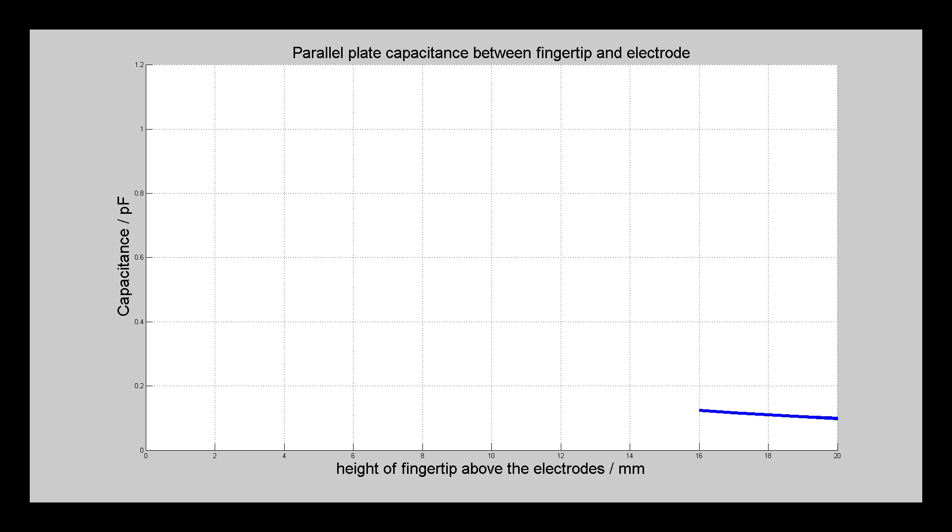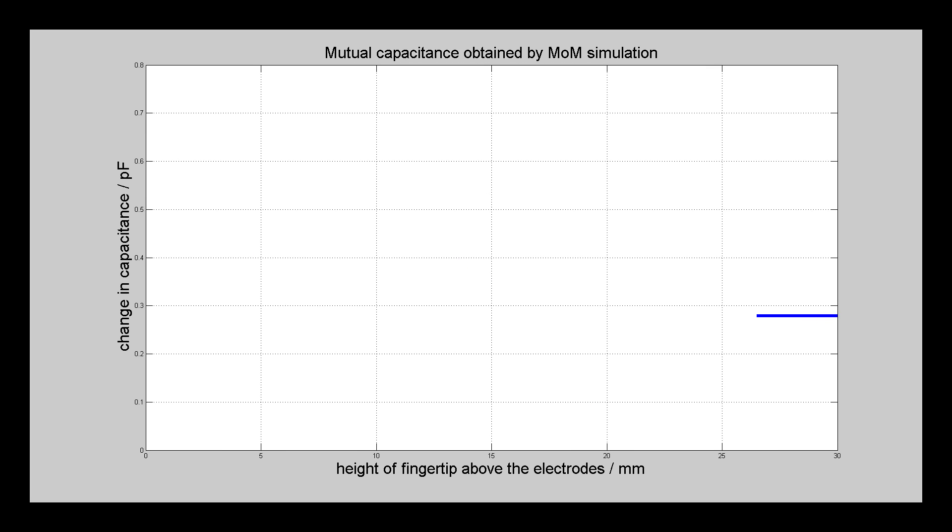As we know, the parallel plate capacitance increases according to 1 over H. But experiments have shown that the mutual capacitance at the receiver behaves totally differently.